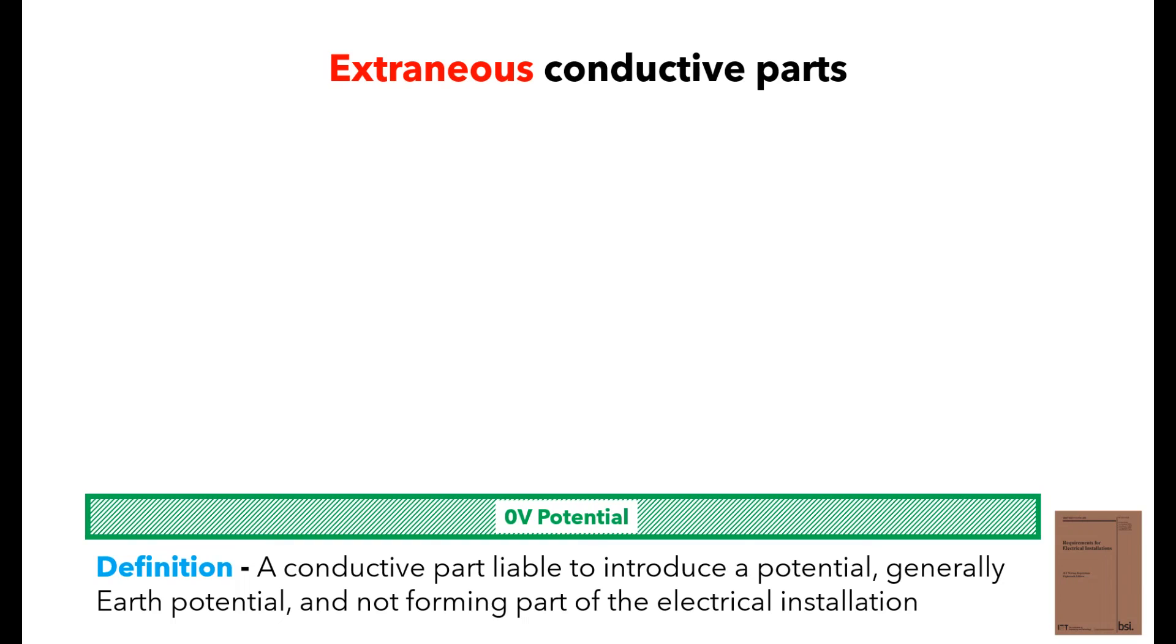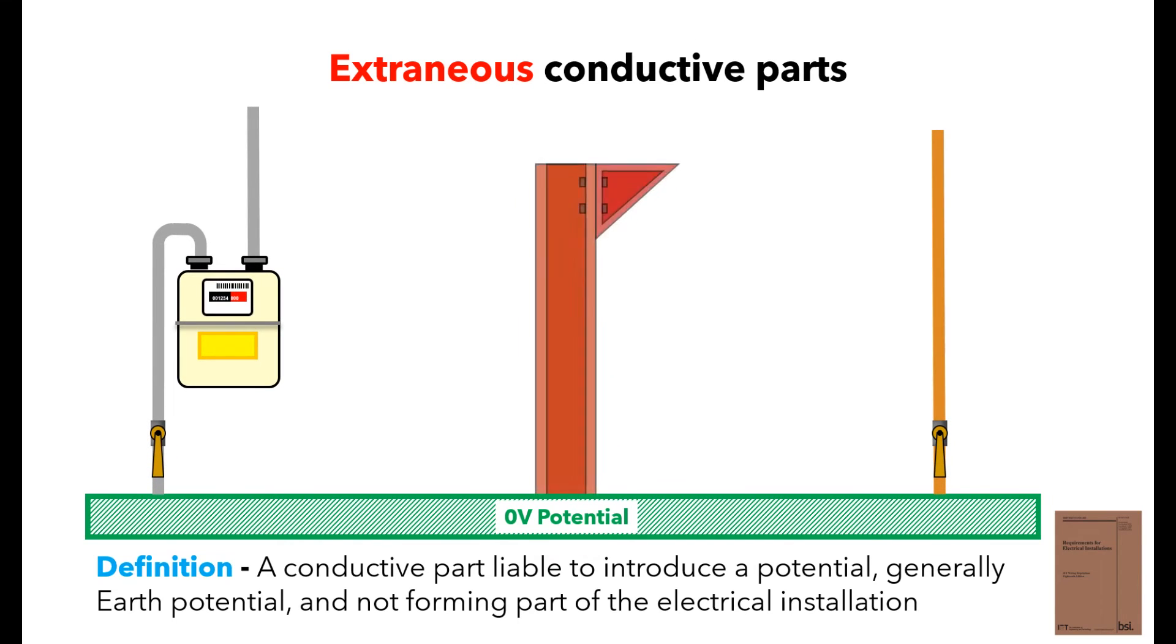BS7671 also gives the definition of an extraneous conductive part, which would be a conductive part coming out of the mass of earth. Examples would be a metallic pipe for gas or water, or structural steel.